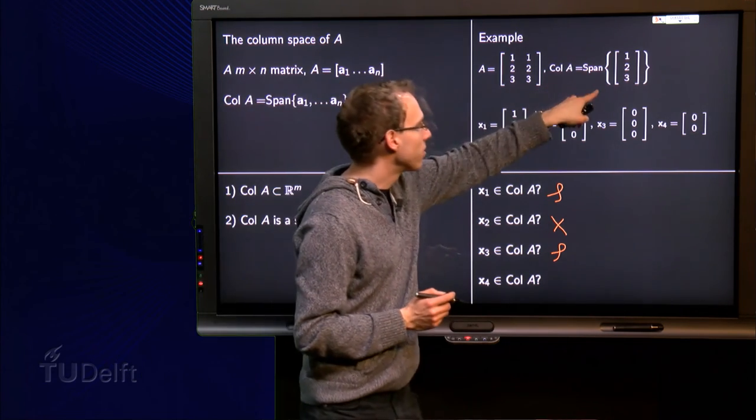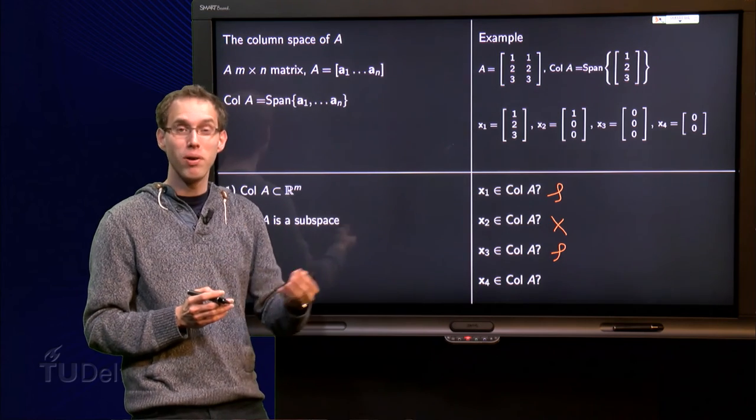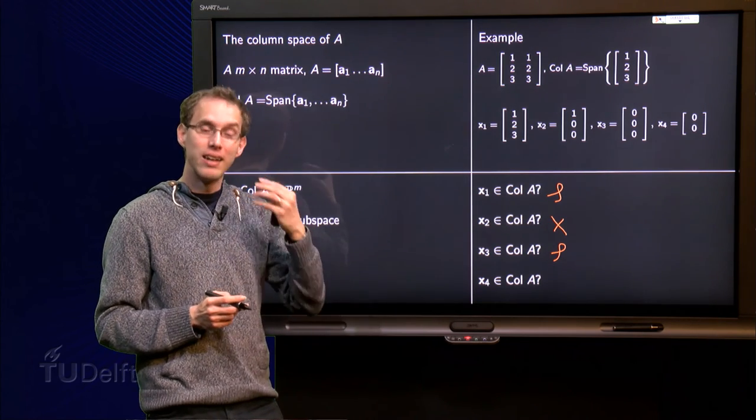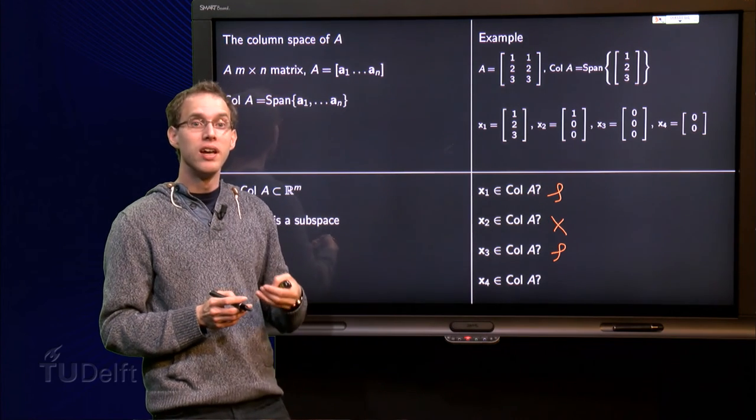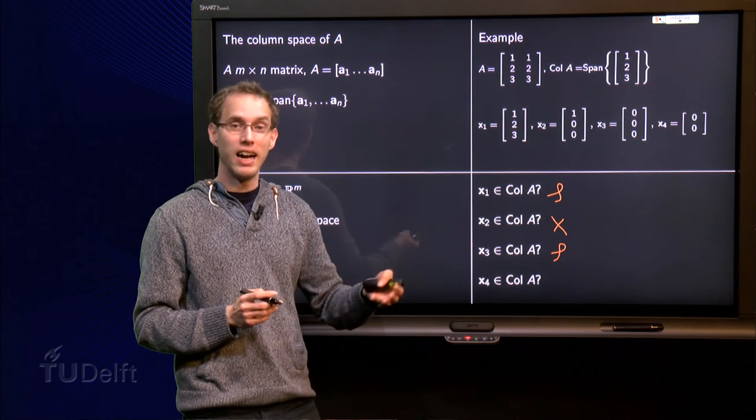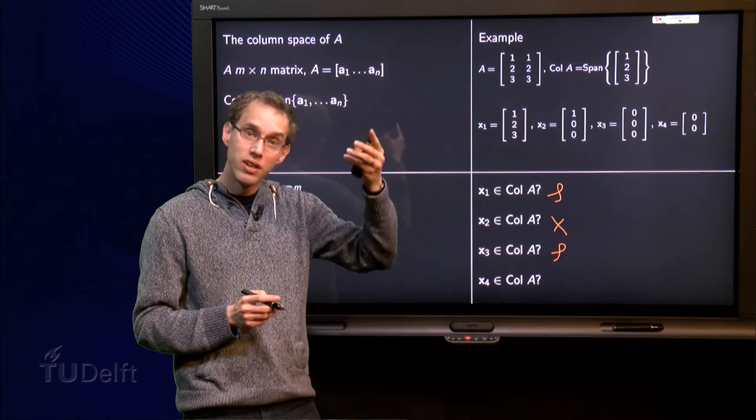The column space of A consists of vectors with three components. So in the column space are only vectors with three components. So the null vector which is in there is a 0 vector with three components.